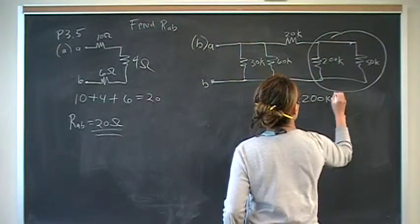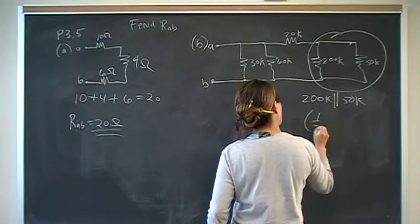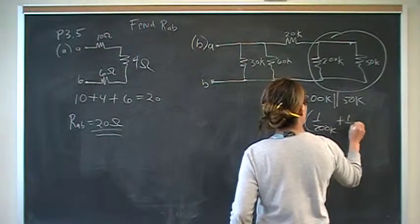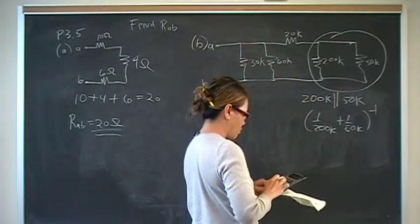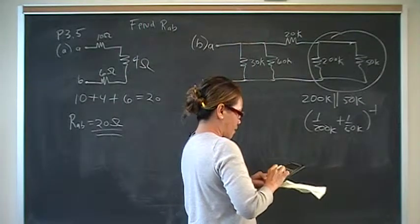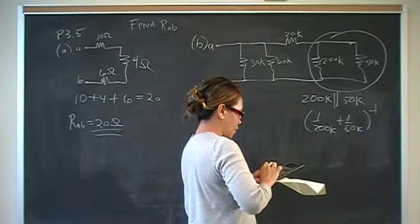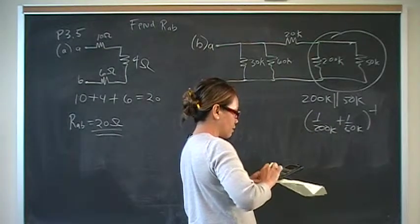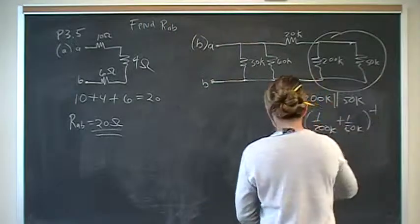200K in parallel with 50K is 1 over 200K plus 1 over 50K inverse. So 1 divided by 200 plus 1 divided by 50. That's going to give us 40K.